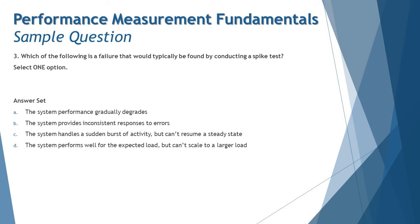Moving to question number three: which of the following is a failure that would typically be found by conducting a spike test? The first thing you need to do is recall the definition of spike, which generally means to have a sudden increment in the number of users out of the entire schedule.